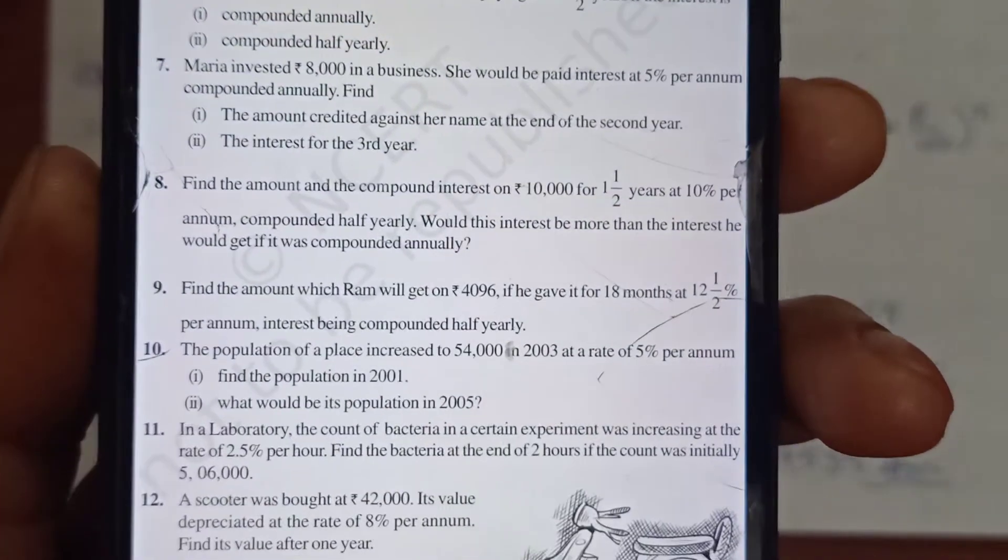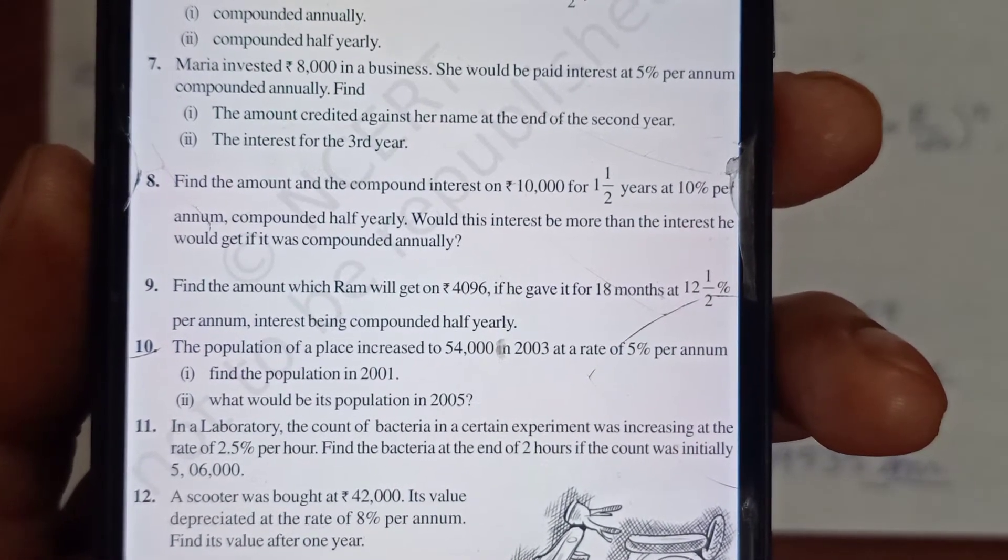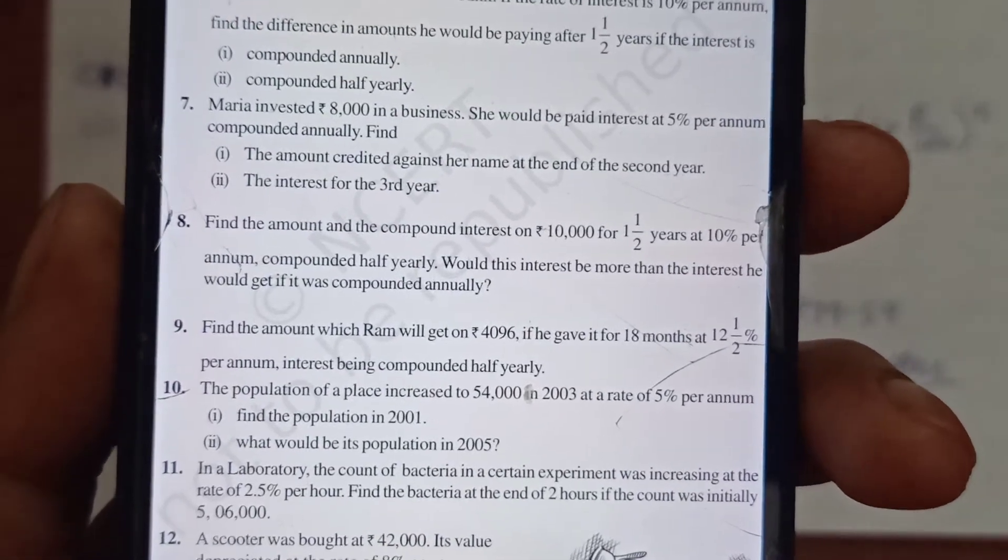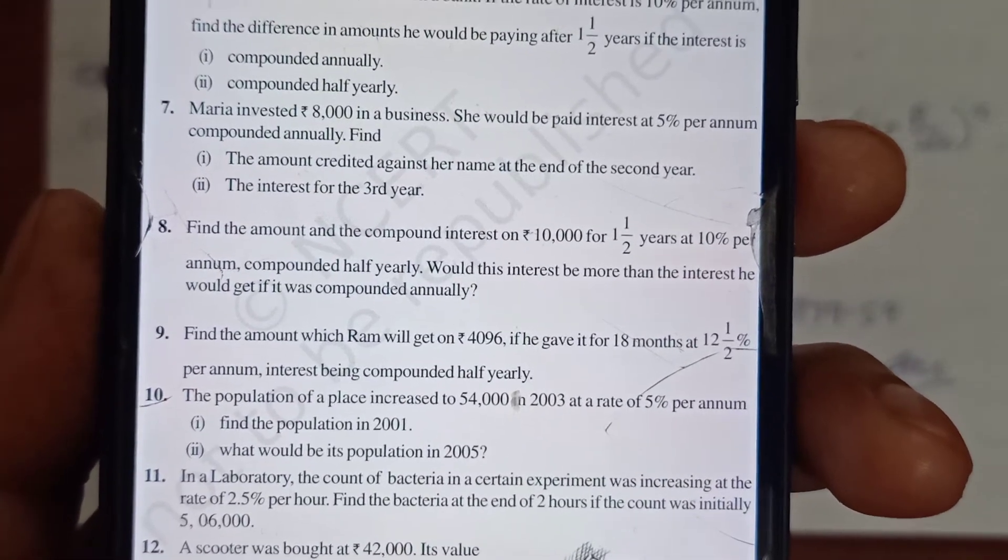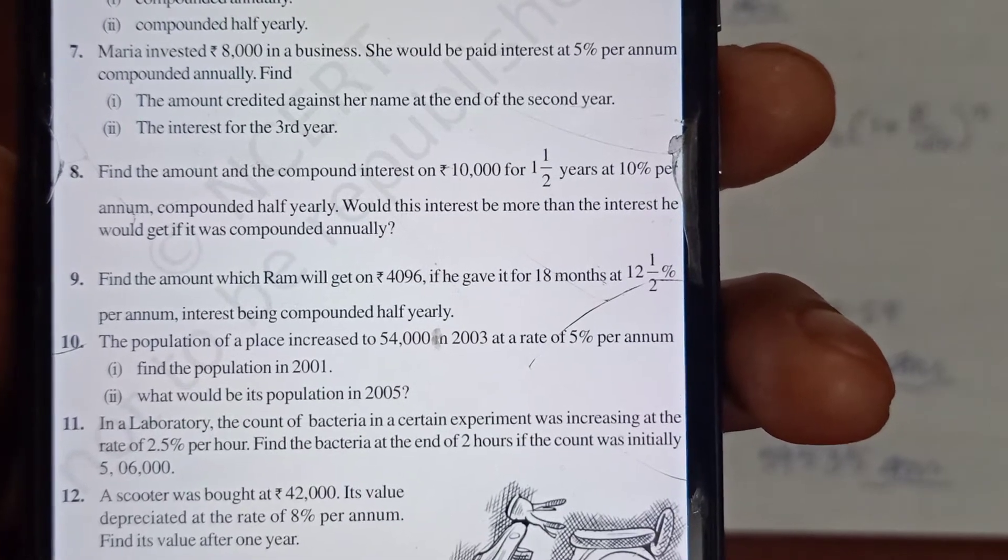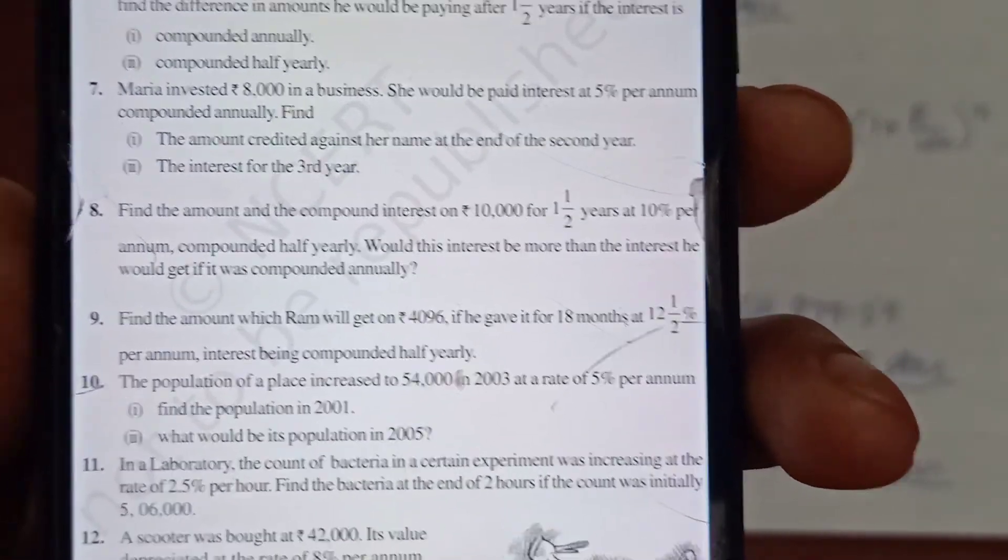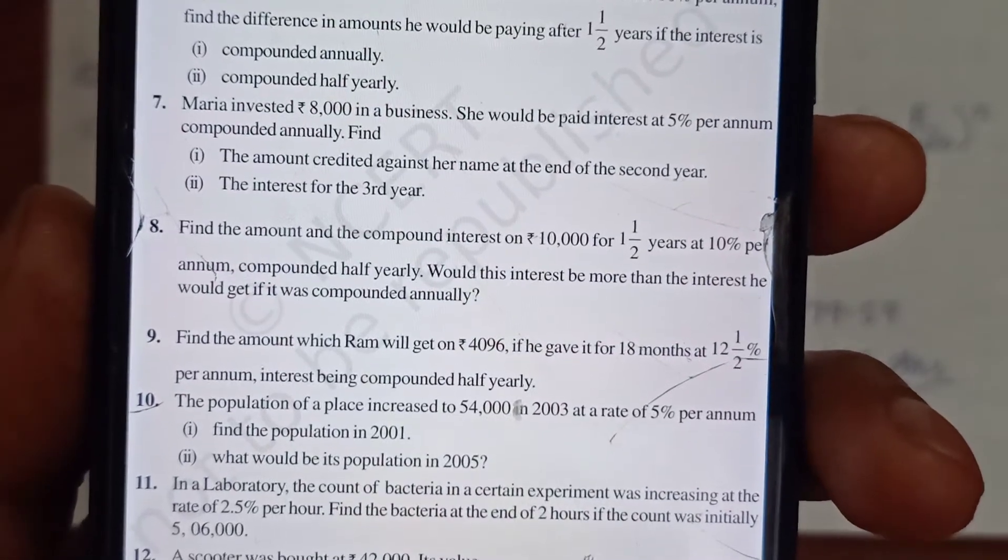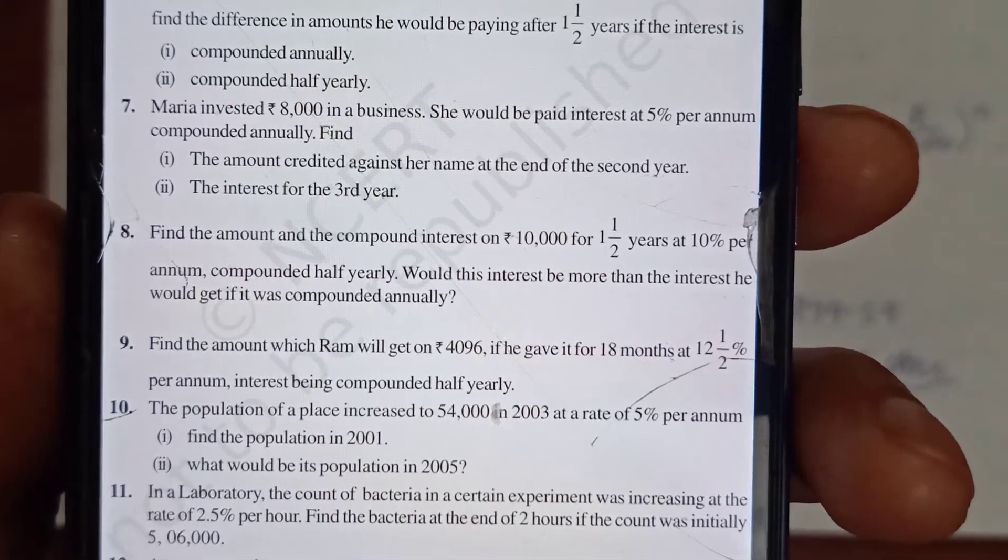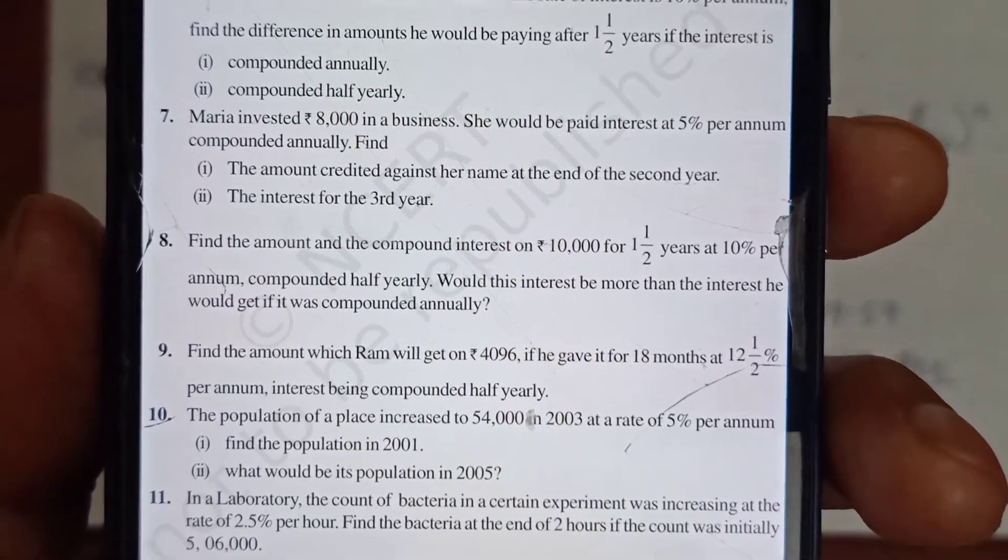Question 8: Find the amount and the compound interest on ₹10,000 for one and a half years at 10% per annum compounded half-yearly. Would this interest be more than the interest he would get if it is being compounded annually? We know when it is compounded annually, interest is less because in semi-annual you get interest three times, whereas here you only get it for one year and then for another half year.